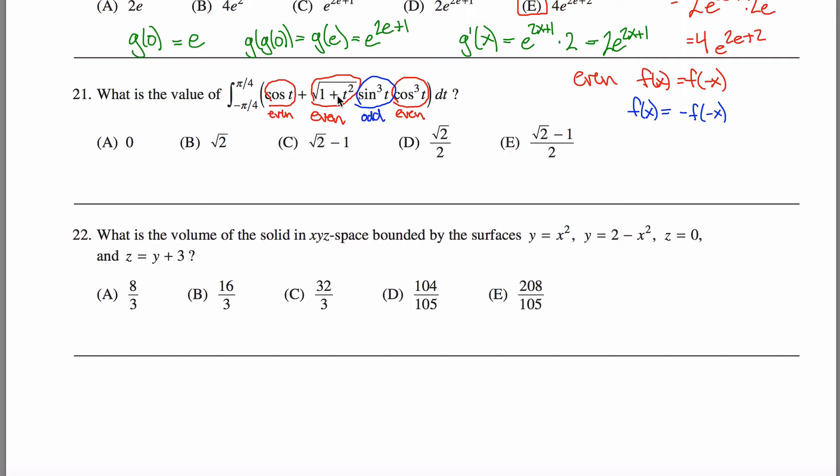And the way you can convince yourself of that is, think about what height maybe this thing would take on at a given x value. Okay, I have some number in my head, and then think about what height this thing would take on at the negative of that x value. Well, this part would be the exact same. This part would almost be the exact same, it would just be the negative of it. So I have the same numbers all around, it's just I have this one negative floating around here. What that's saying is that I'll end up with an odd function here. The product of one odd and as many even functions as you want is itself an odd function.